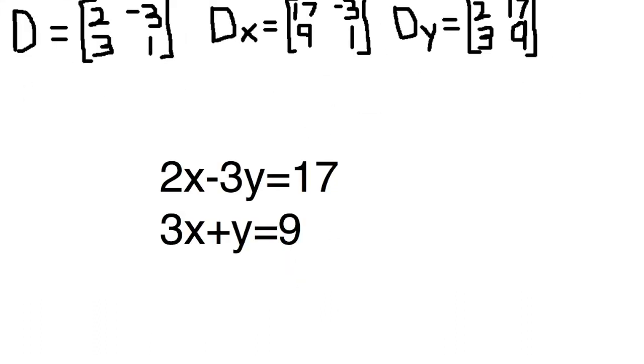To get the matrices for D, dx, and dy, for D you put the x coefficients in the first column, the y coefficients in the second column.